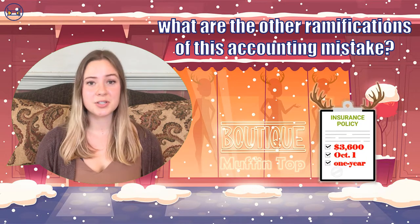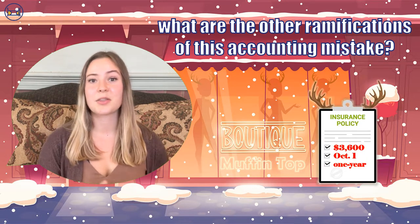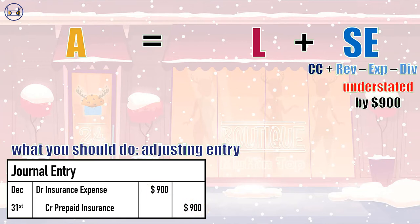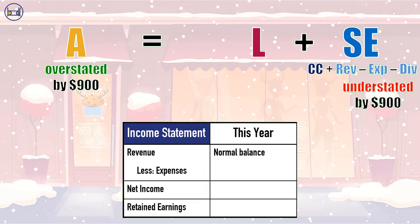Let's return to our antler insurance example and trace this mistake through the company's accounts through time. By forgetting to adjust its antler insurance expense, Muffin Top failed to record a $900 debit to insurance expense to recognize the quarter of the one-year insurance that has been used up, and a $900 credit to its prepaid insurance expense to reflect the decrease in this asset. So Muffin Top's expenses are understated by $900, and its assets are overstated by $900. That understated expense will then have an impact on the income statement — we'll be deducting fewer expenses from our revenues than we ought to, causing net income to be overstated by $900.